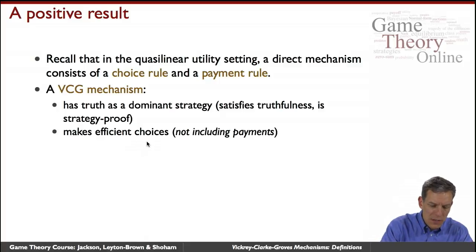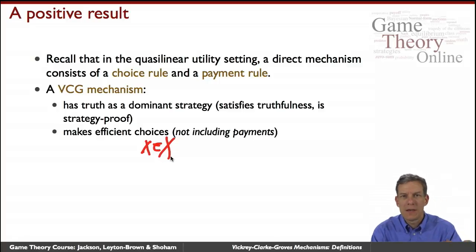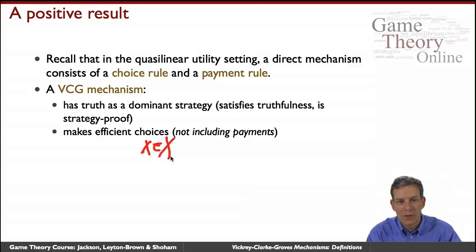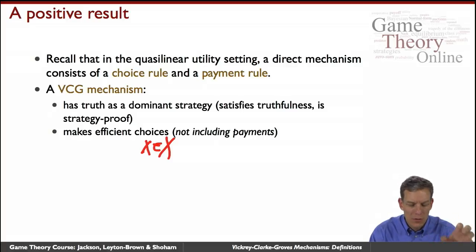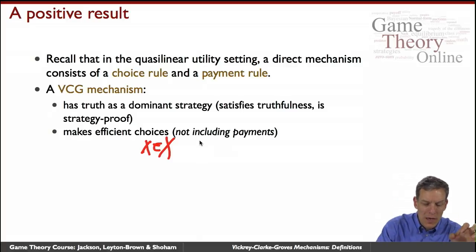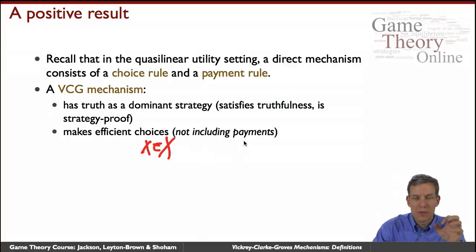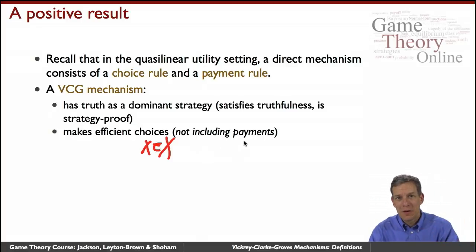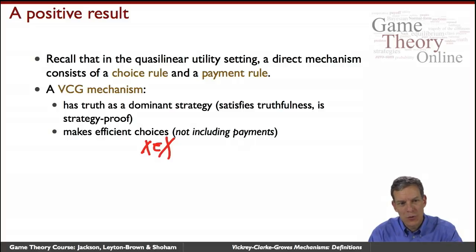When we think about which X in the set X maximizes the overall total sum of utilities in society, the mechanism is going to pick those. It might not be efficient in terms of making all the payments balanced, but it's going to make efficient choices.